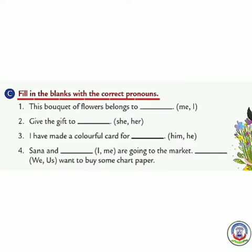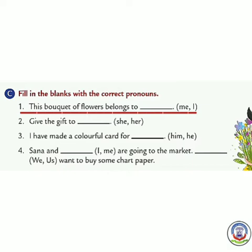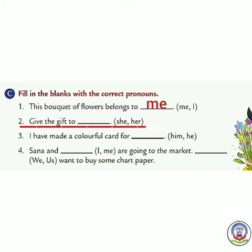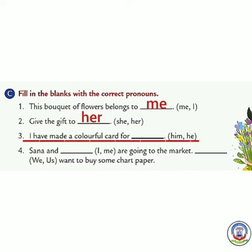Number 1: 'This bouquet of flowers belongs to dash.' Answer: 'This bouquet of flowers belongs to me.' Number 2: 'Give the gift to dash.' Answer: 'Give the gift to her.' Number 3: 'I have made a colorful card for dash.' Answer: 'I have made a colorful card for him.'